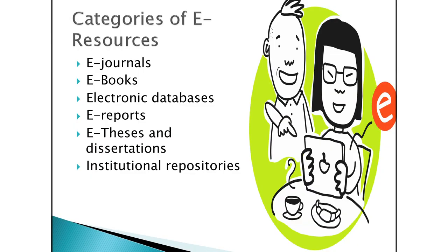Categories of e-resources. There are different types of e-resources: e-journals, e-books, electronic databases, e-reports, e-theses and dissertations, and institutional repositories.